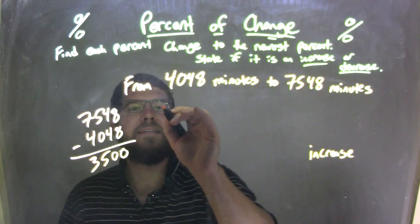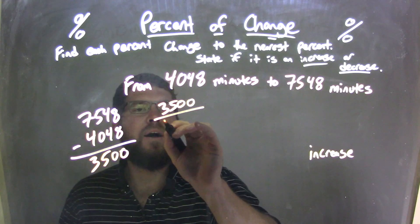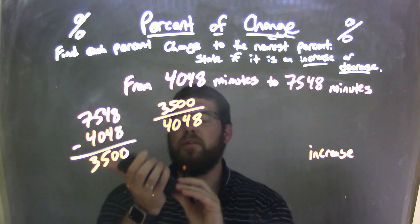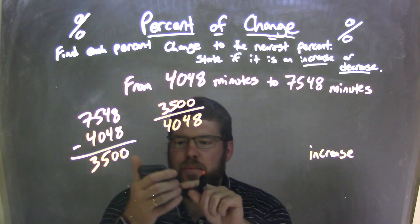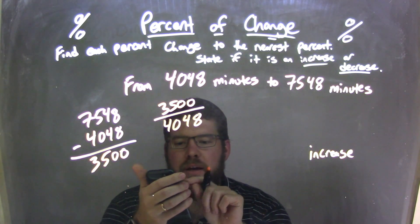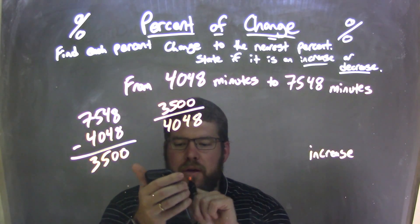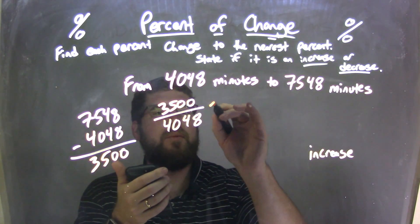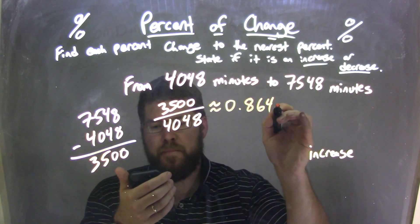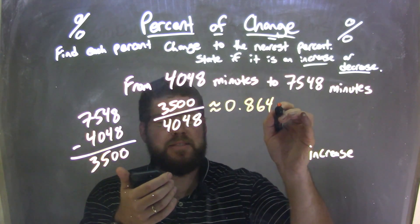So we take that 3,500 and we divide it by 4,048. I'm going to raise my calculator for this one. Let's give me a decimal. 3,500 divided by 4,048. And we got approximately 0.86462.